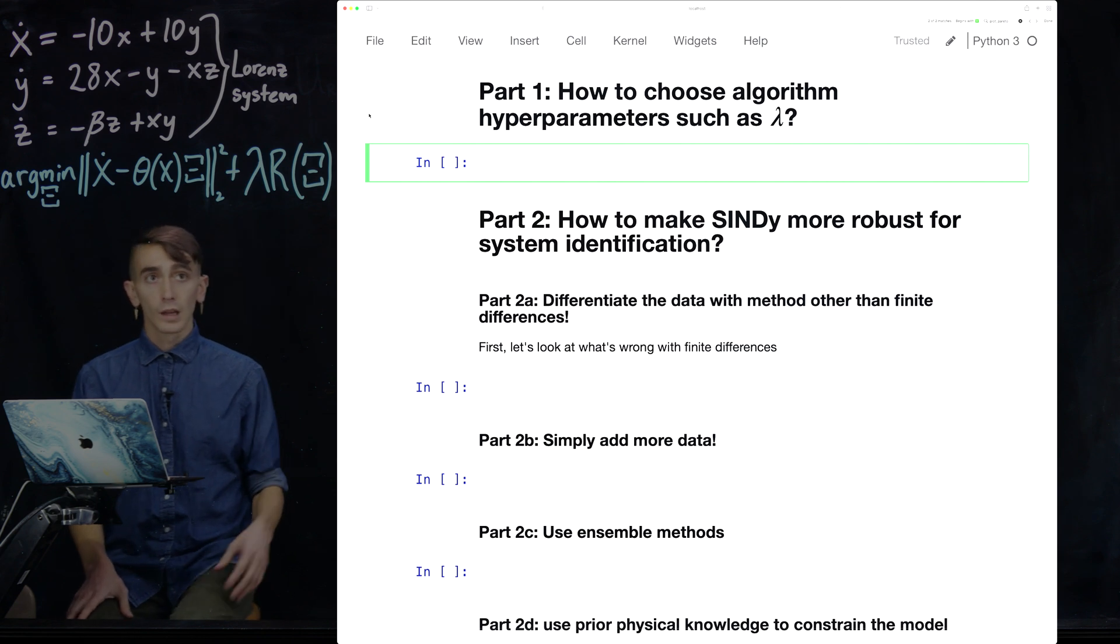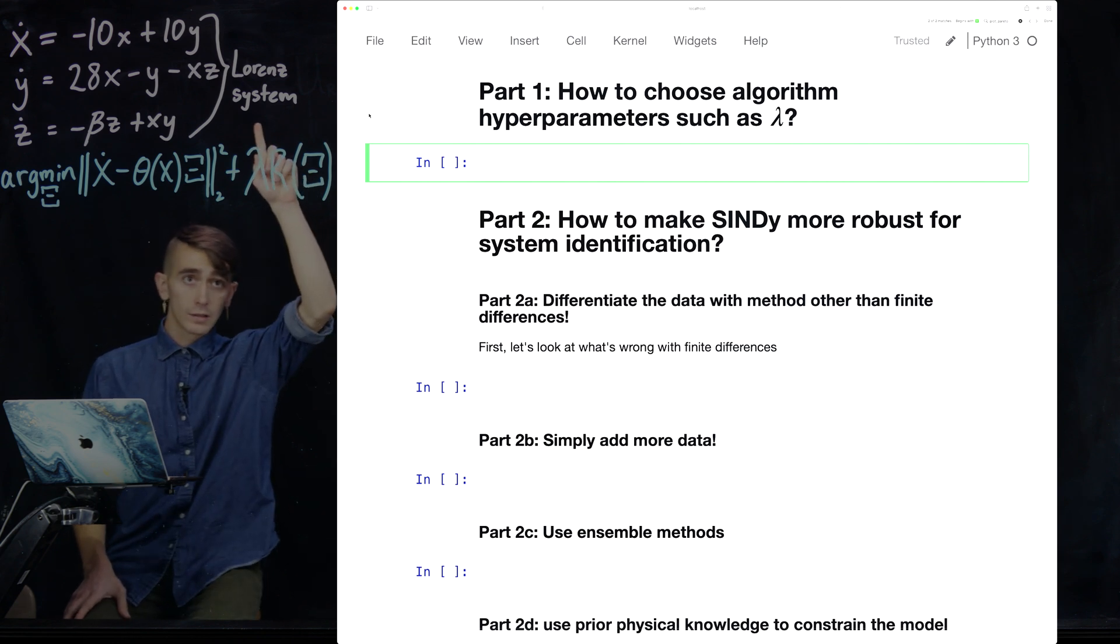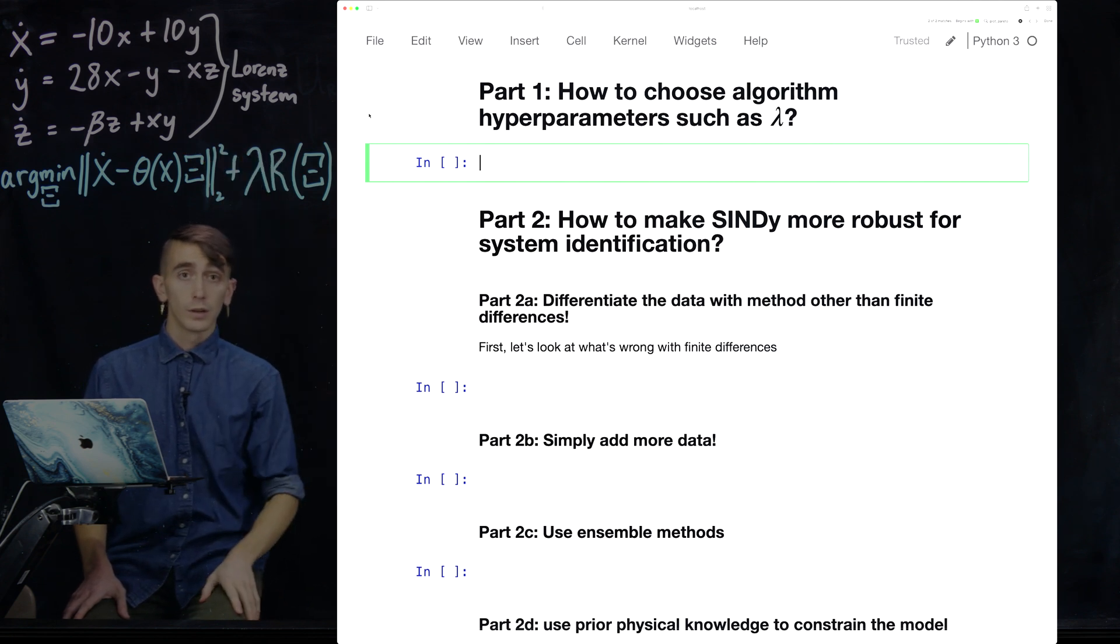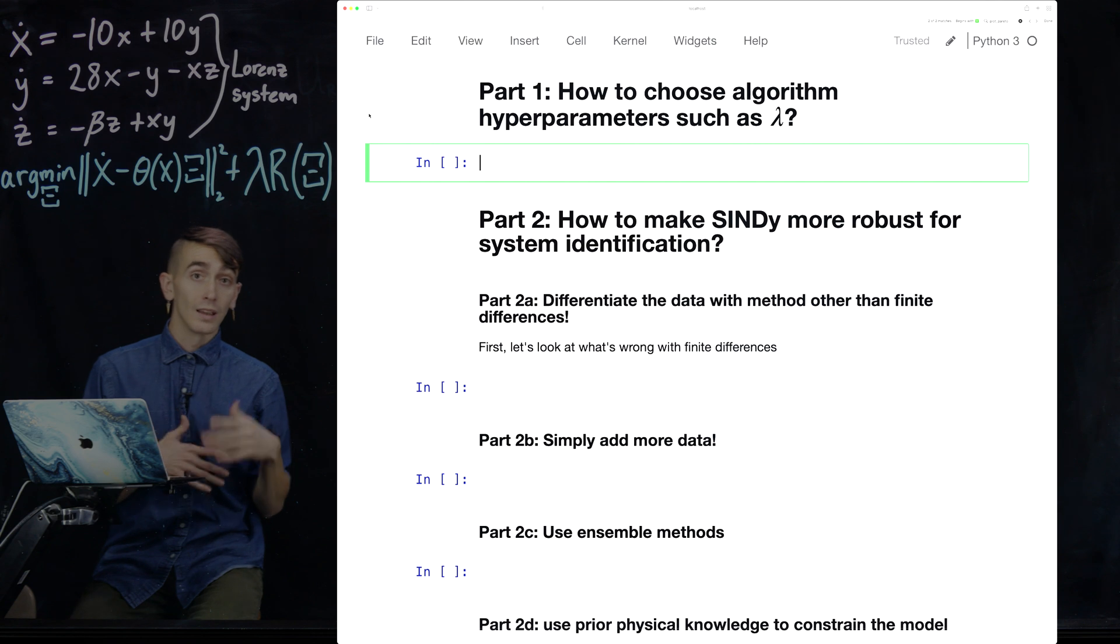And for these examples, I'll be showing them for the Lorenz system, which you can see the system up here. It's a coupled system of ODEs in three dimensions, so X, Y, Z variables.